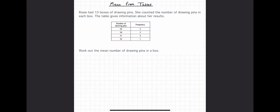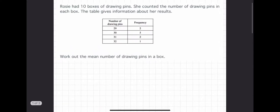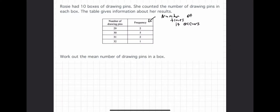We know that from year seven, but now we have a table, so it's a bit different. The frequency column means the number of times a value occurs. Looking at number of drawing pins, what it's saying is two boxes have 29 drawing pins.